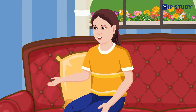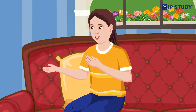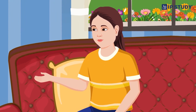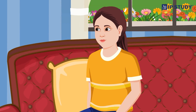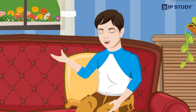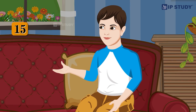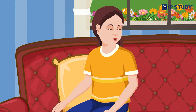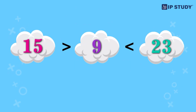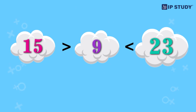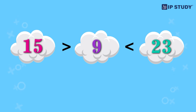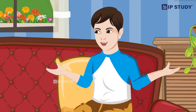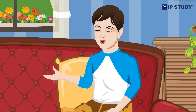What about finding the biggest and smallest numbers? It's like organizing a race, mom. The biggest number is the winner who comes first and the smallest number is the one who comes last. Can we try it? Let's say we have the numbers 15, 9, and 23. Which one is the biggest? Let's look at each number — 15 is bigger than 9, but 23 is bigger than both 15 and 9, so 23 is the biggest. And 9 is the smallest because it's less than both 15 and 23.